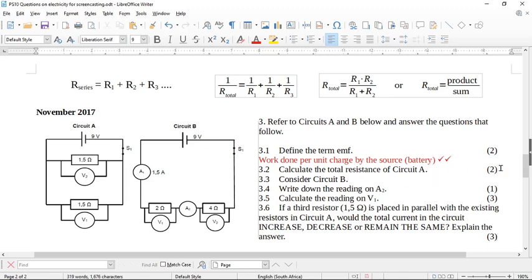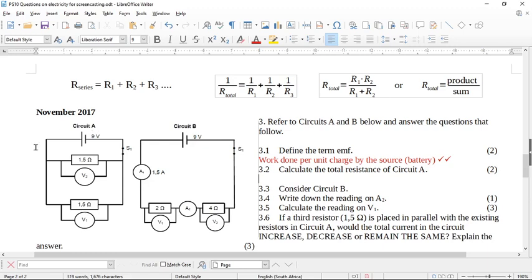Calculate the total resistance of circuit A. Now circuit A is this one over here, it's very simple, there's just two 1.5 ohm resistors in parallel with each other.